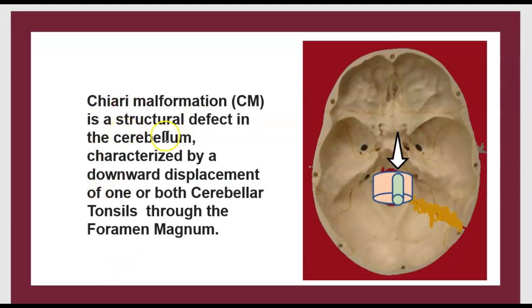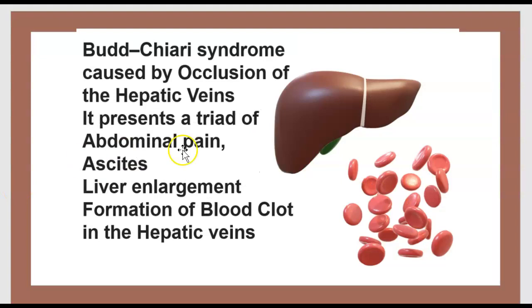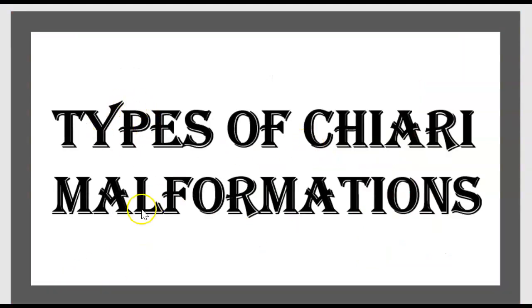As a reminder, Chiari malformation is a structural defect in the cerebellum, characterized by downward displacement of both cerebellar tonsils through the foramen magnum. Don't confuse it with Budd-Chiari syndrome, which is caused by occlusion of the hepatic vein with a triad of abdominal pain, ascites, liver enlargement, and formation of a blood clot in the hepatic vein.